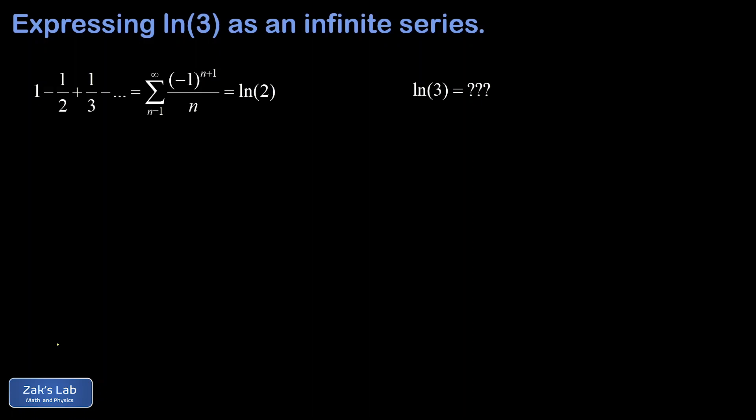In a previous video, we showed that the sum of the alternating harmonic series — that's 1 minus a half plus a third, or in sigma notation, negative 1 to the n plus 1 over n summed from 1 to infinity — gives this beautiful result of natural log 2. The quick summary is that we accomplished this by expanding natural log of 1 plus x in a power series, then substituting x equals 1.